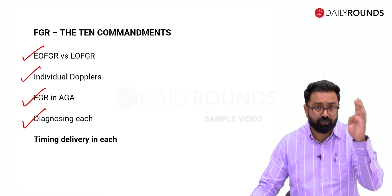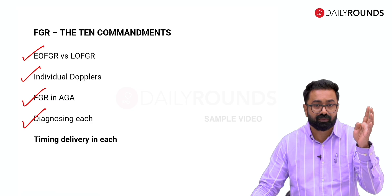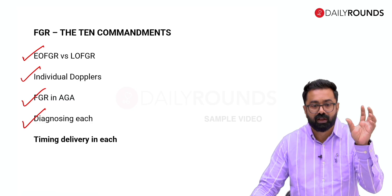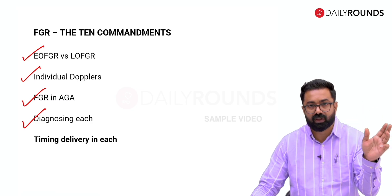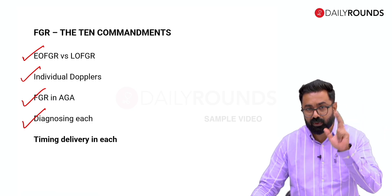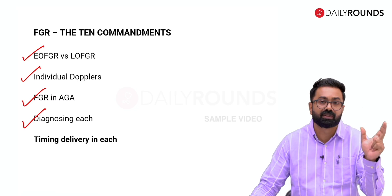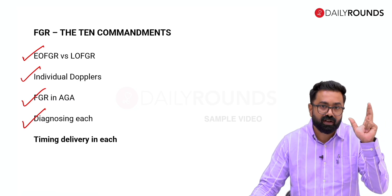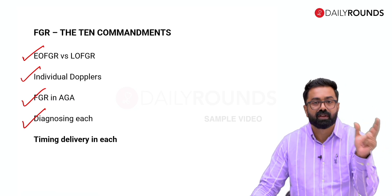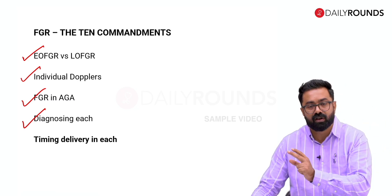There are four distinct classification groups: early onset FGR versus late onset FGR is one classification, and FGR in SGA babies versus FGR in AGA babies is another. These are linked but independent, distinct concepts that need to be understood separately.